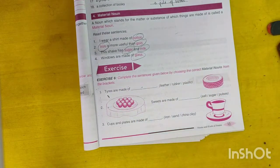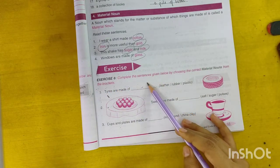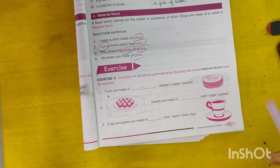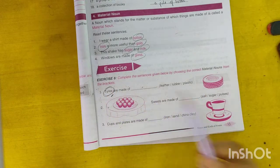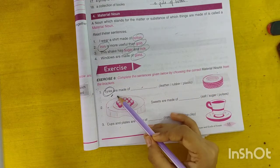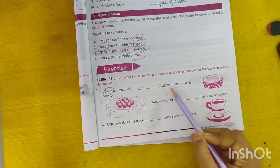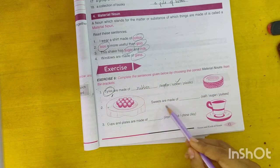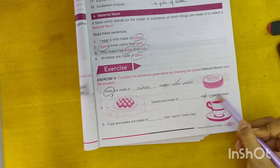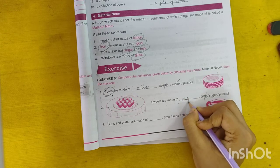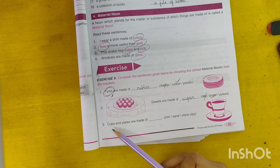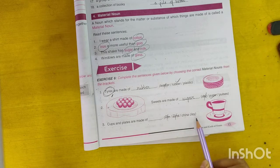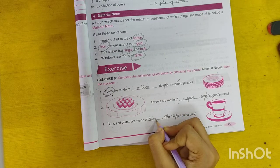Now the exercise. Exercise 6. Complete sentences given below by choosing the correct material noun from the brackets. Tires are made of rubber. Second, sweets are made of sugar. Third, cups and plates are made of china clay.